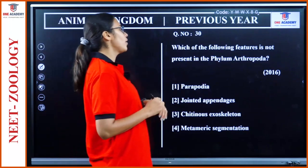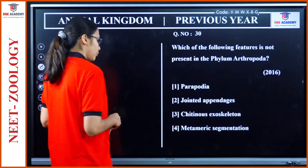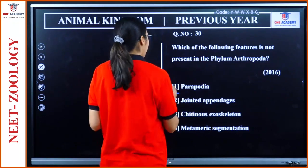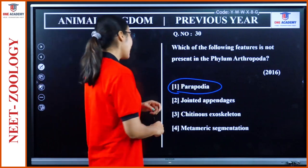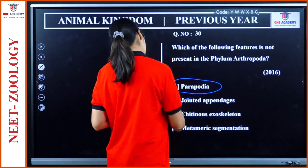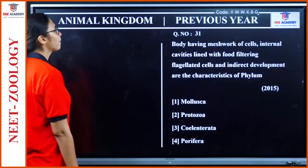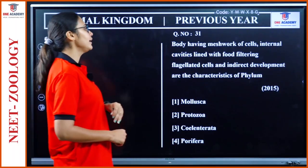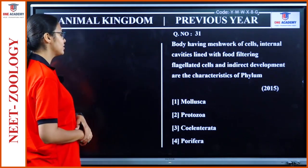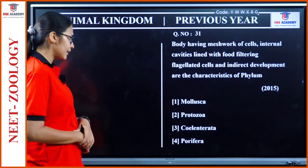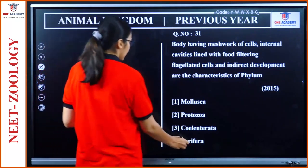Question 30: 'Which feature is not present in phylum Arthropoda?' Parapodia — seen in Annelida — is the answer. Arthropoda have jointed appendages, chitinous exoskeleton, and metameric segmentation. Option 1. Question 31: 'Body having a network of cells, internal cavities lined with food-filtering flagellated cells, and indirect development — characteristic of which phylum?' The answer is Porifera; the spongocoel is lined by choanocytes. Option 4.